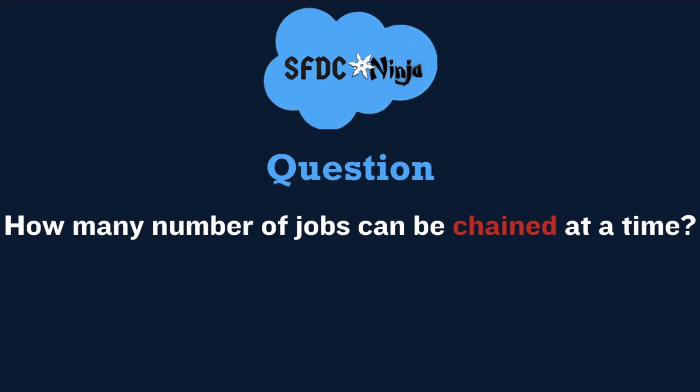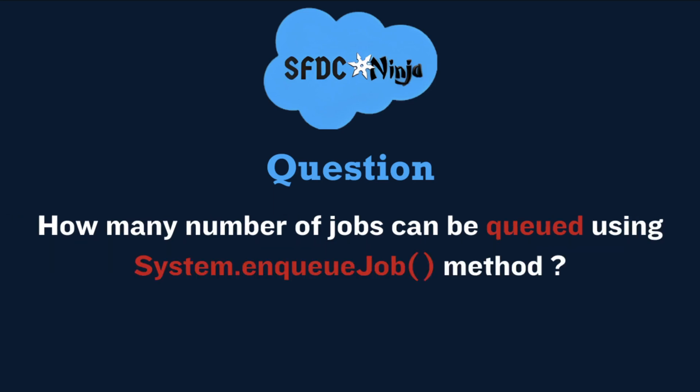That includes the initial parent job as well. Next question: how many jobs can be queued using the system.enqueueJob method? You can add 50 jobs to the queue with this method in a single transaction. While in an asynchronous transaction, like from a batch Apex job, you can add only one job to the queue. To check how many Queueable jobs have been added in one transaction, you can use limits.getQueueableJobs.